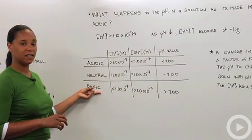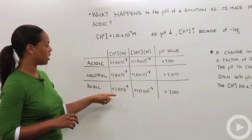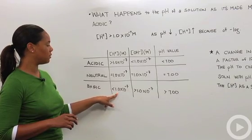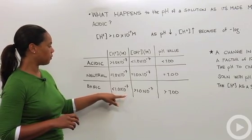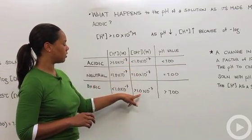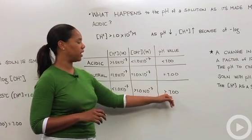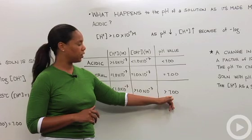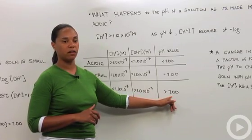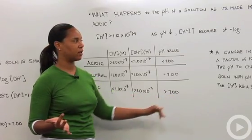If you have a basic solution, it means that your concentration of protons is less than 1.0 times 10 to the minus 7th, and hydroxide concentration is greater than 1.0 times 10 to the minus 7th, and your pH value is greater than 7, usually between 7 and 14. The higher the value, the more basic your solution.